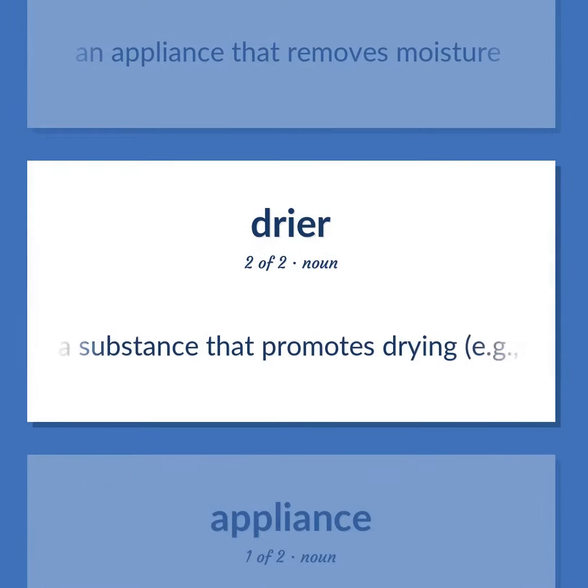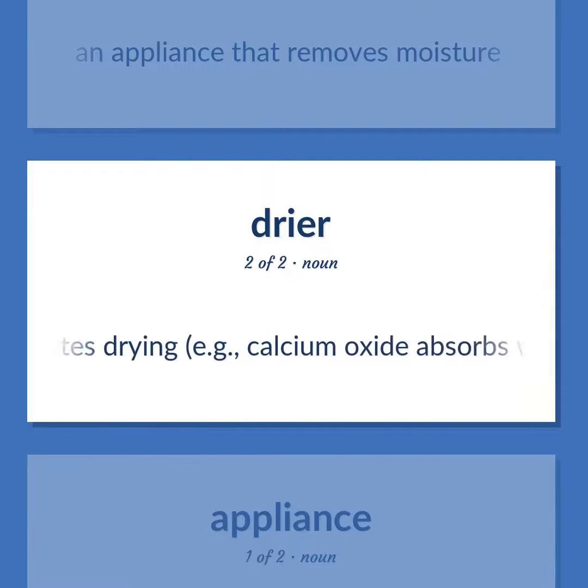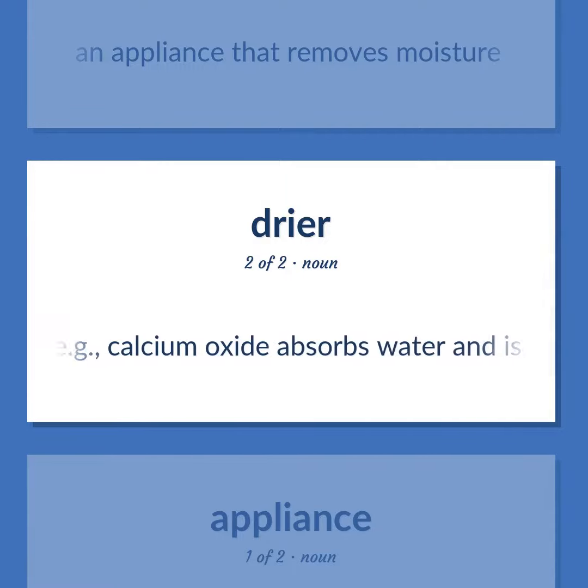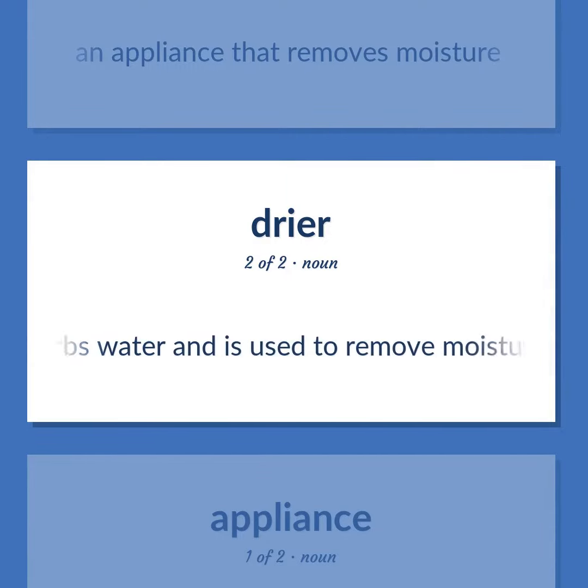A substance that promotes drying — e.g., calcium oxide absorbs water and is used to remove moisture.